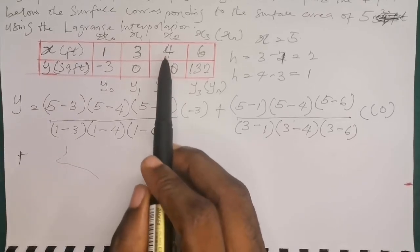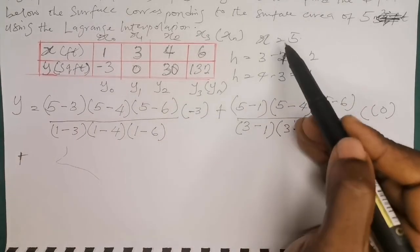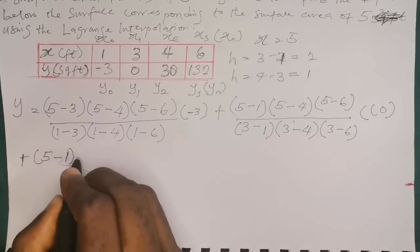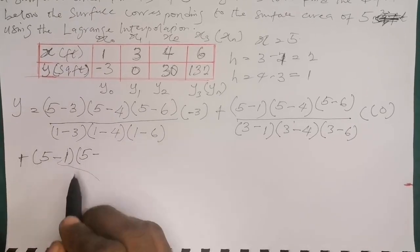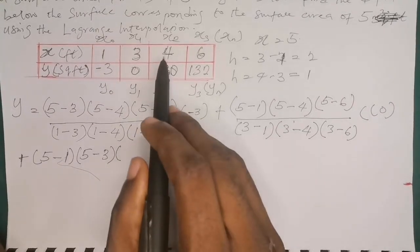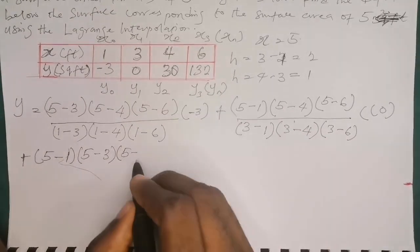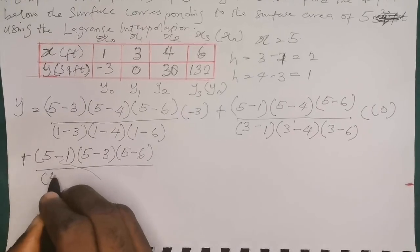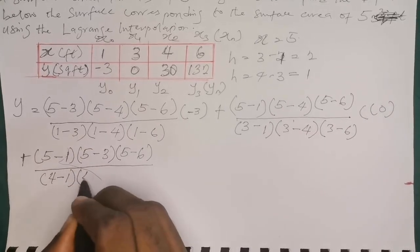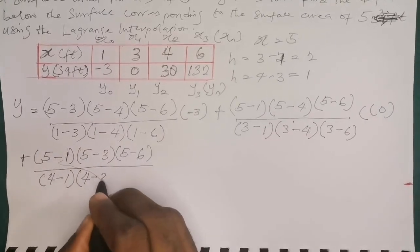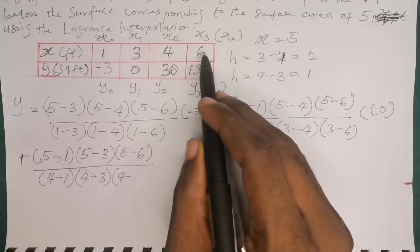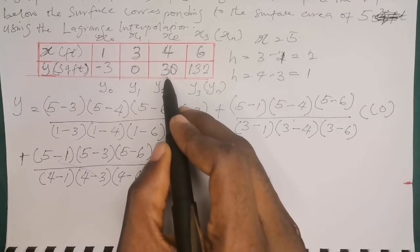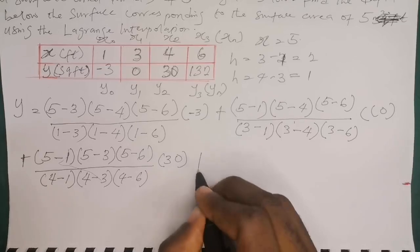Moving to column x2: x2 does not appear in the numerator. The numerator is (5 minus x-naught)(5 minus x1)(5 minus x3) = (5−1)(5−3)(5−6). The denominator is (x2 minus x-naught)(x2 minus x1)(x2 minus x3) = (4−1)(4−3)(4−6). We multiply the result by y2, which is 30.